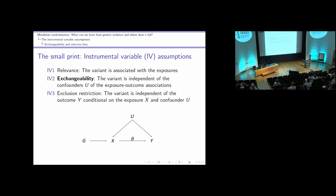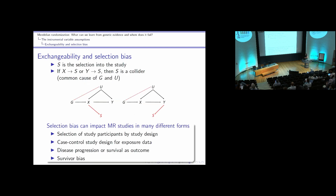The second assumption, the exchangeability assumption, has often been waved away as untestable. In recent years, there have been quite a few examples where we think there have been violations, most of which boil down to selection bias.